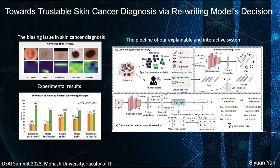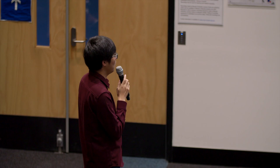First, we cluster the model's behavior to identify confounding concepts such as rulers and dark corners, and collect clinical concepts from existing dermatology resources. Then we construct a concept bank by learning a set of concept activation vectors. Finally, the concept bank is mapped to the bottleneck layer of the model, and we use a logic layer for reasoning. We perform experiments on five highly imbalanced datasets exploring the impact of removing confounding concepts through human interaction, and our method using human interaction significantly improves performance. For more details, please refer to our paper.